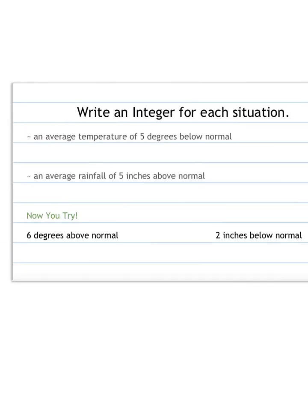Here we have some different situations, and we want to write an integer for the situation. An average temperature of 5 degrees below normal. Well, this word below tells us that we are negative, and we're at 5, so our integer would be negative 5. Next one, an average rainfall of 5 inches above normal. I see the word above, and again 5, so this time it's 5, or you could write it with the positive sign in front of it.